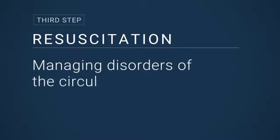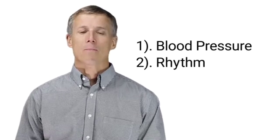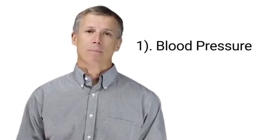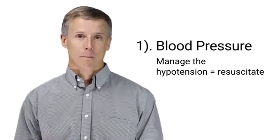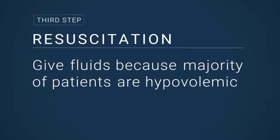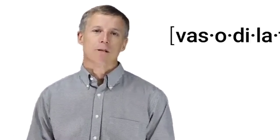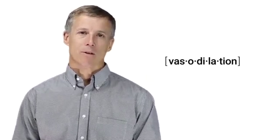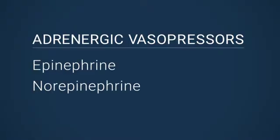The third step in resuscitating a poison patient is managing disorders of the circulation. That really comes down to two things: blood pressure and rhythm. In terms of blood pressure, the management of the hypotensive poison patient is going to look a lot like any other management of a patient with hypotension from medical causes. You're going to give them fluids because the majority of patients are going to be hypovolemic—either because they've been vomiting or haven't had a lot of oral intake because of decreased mental status, or because they have vasodilation since many of the poisonings that we see cause some degree of peripheral vasodilation. In either event, the first step is going to be managing these patients with fluids. The second step is adrenergic vasopressors. Epinephrine and norepinephrine are my drugs of choice.